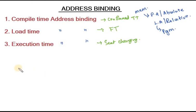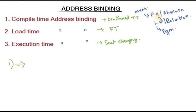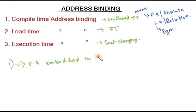Compile time address binding means that during compilation, the absolute address or physical address will be embedded in the executable code. So the physical address is embedded in the executable code.